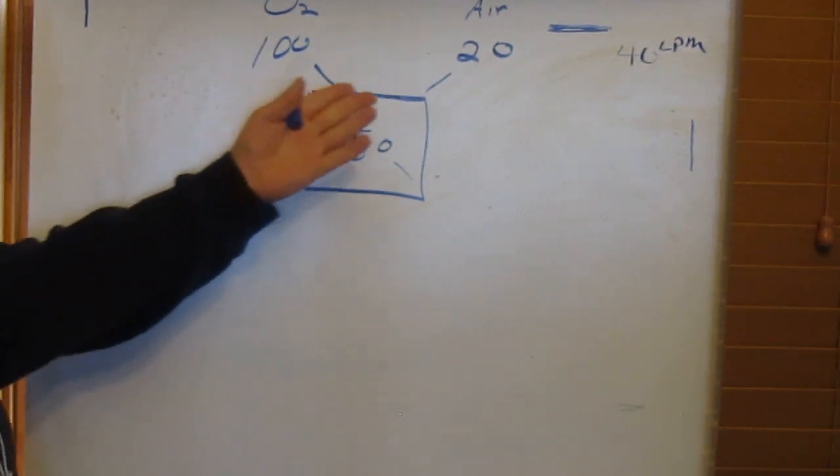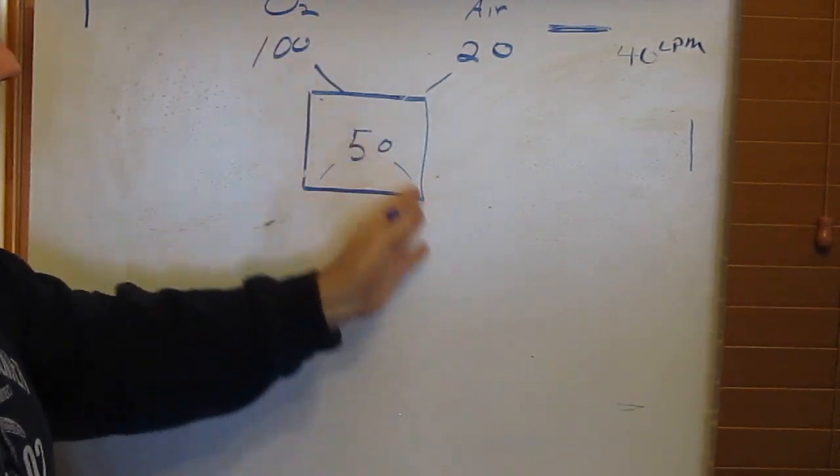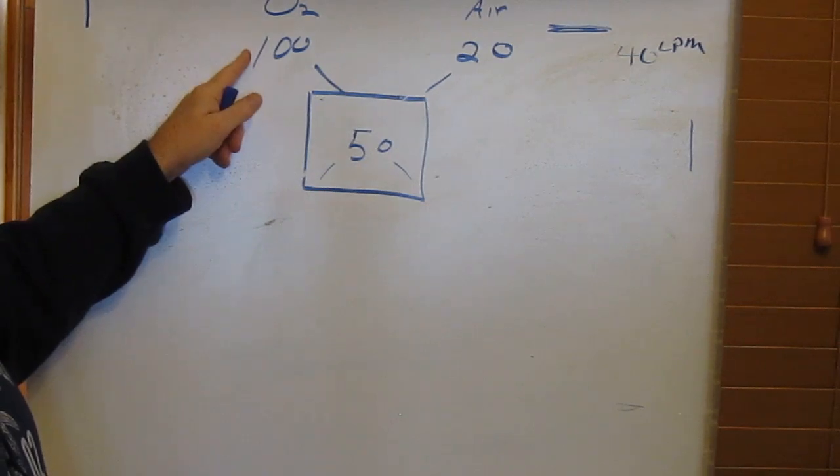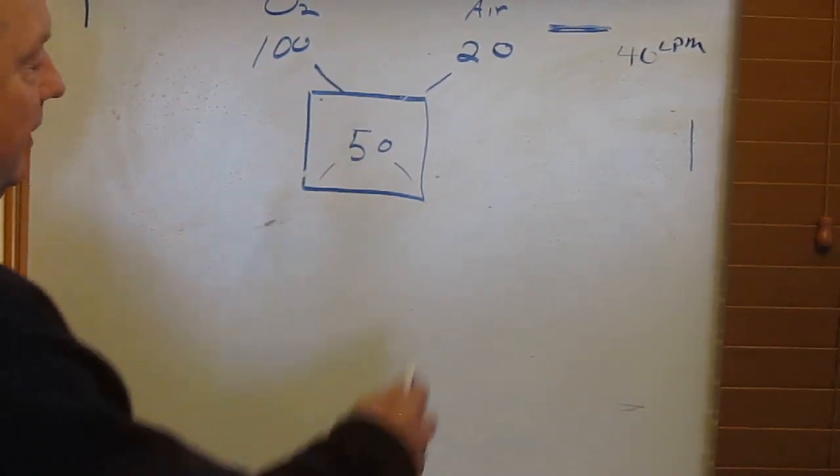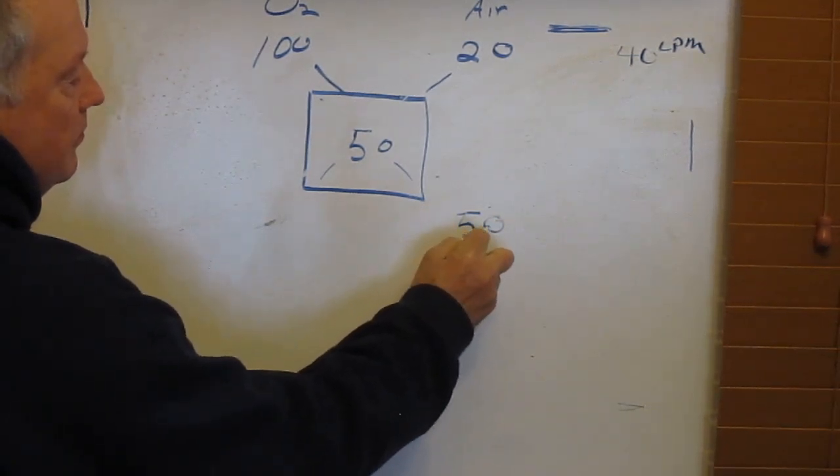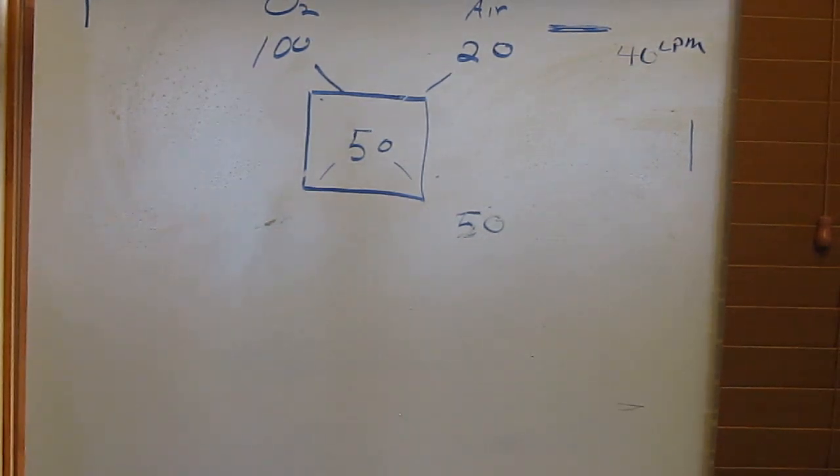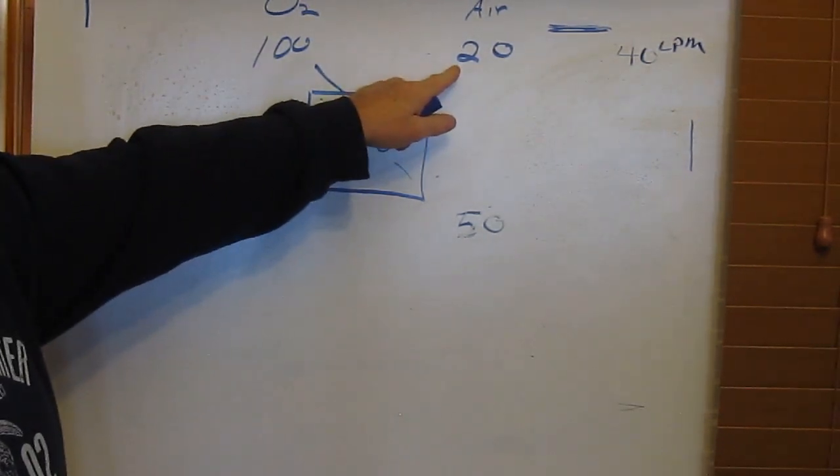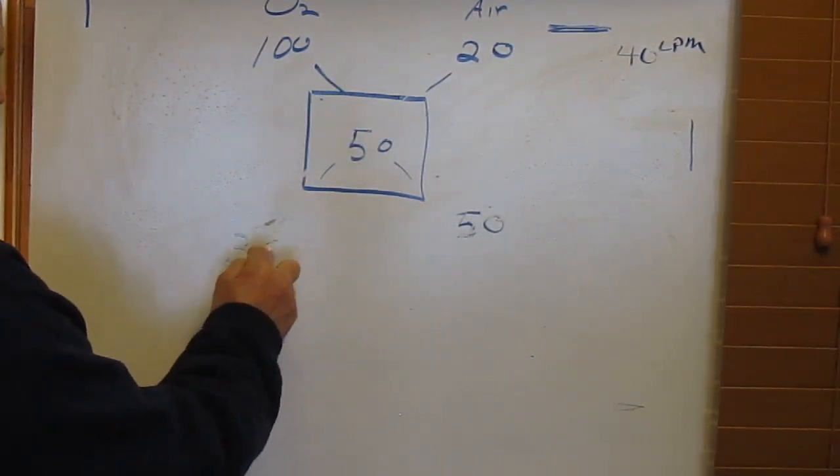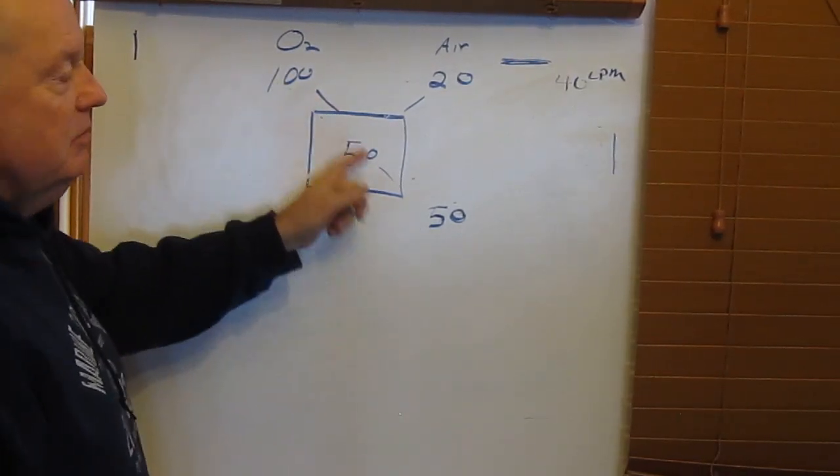And then we simply subtract. We subtract diagonally across the magic box and we subtract the smaller from the larger. 100 subtract 50 is 50. 20 subtracted from 50 is 30.